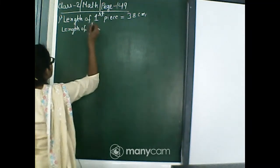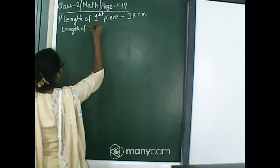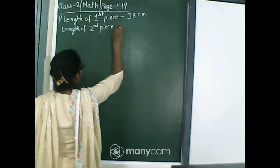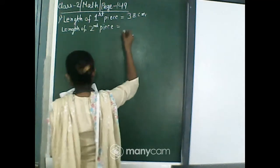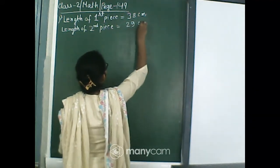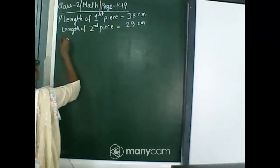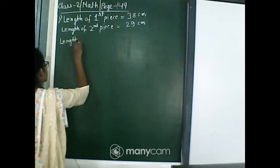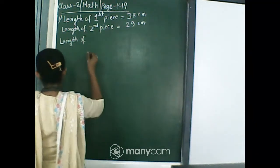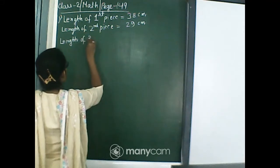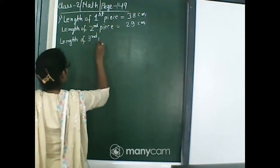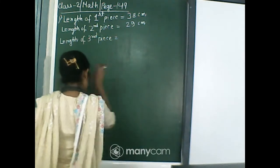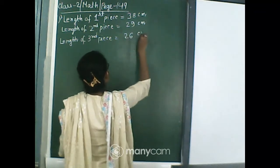We can write down that length of second piece, and we can write down that length of third piece is 26 cm.